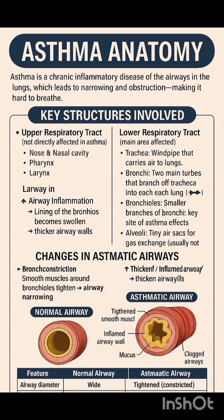In asthma, three major changes occur in the bronchi and bronchioles. One: bronchoconstriction — the smooth muscles around the bronchioles tighten, causing airway narrowing.